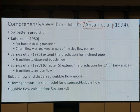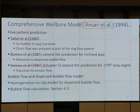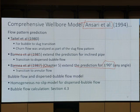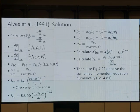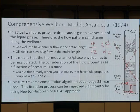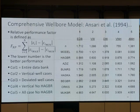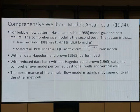At the end, we talk about the Ansari model — combining everything using Taitel, Brill, and others. This is Brill's prediction for any angle, which is not in this set of lectures yet. The Ansari model is better than any other model.